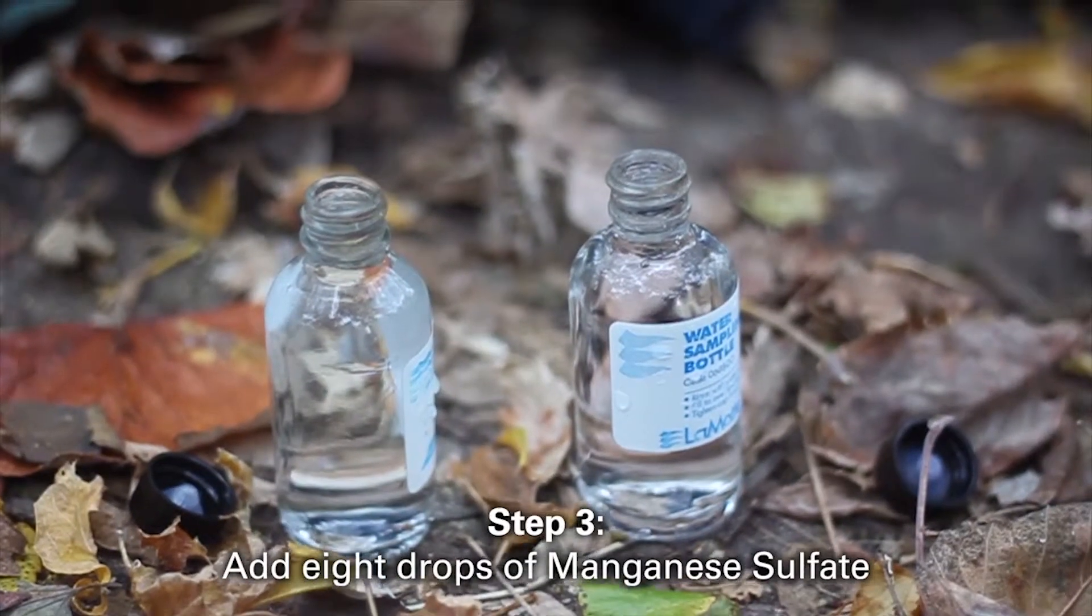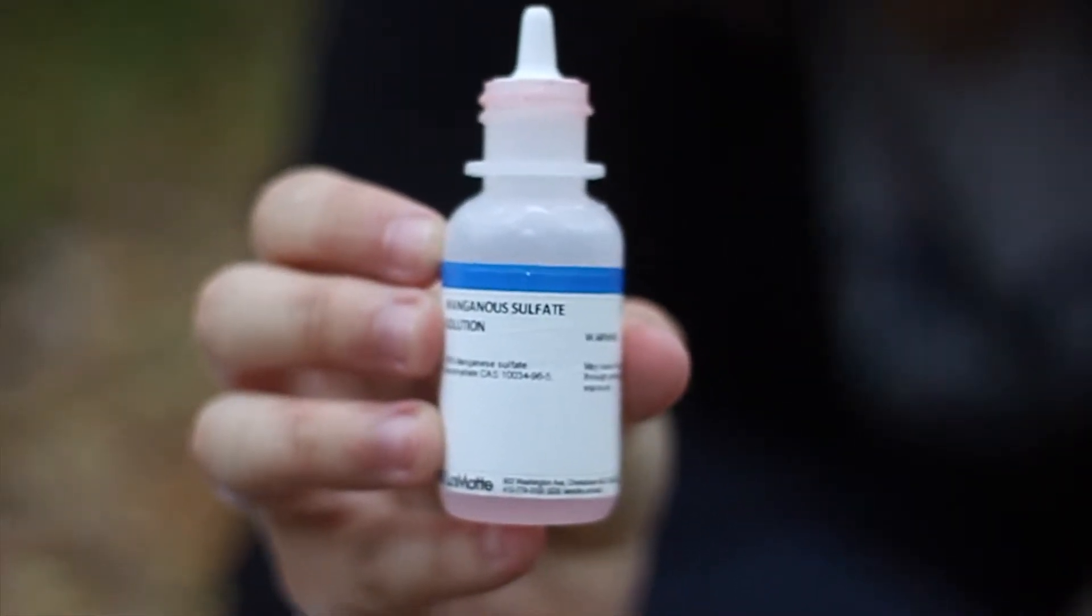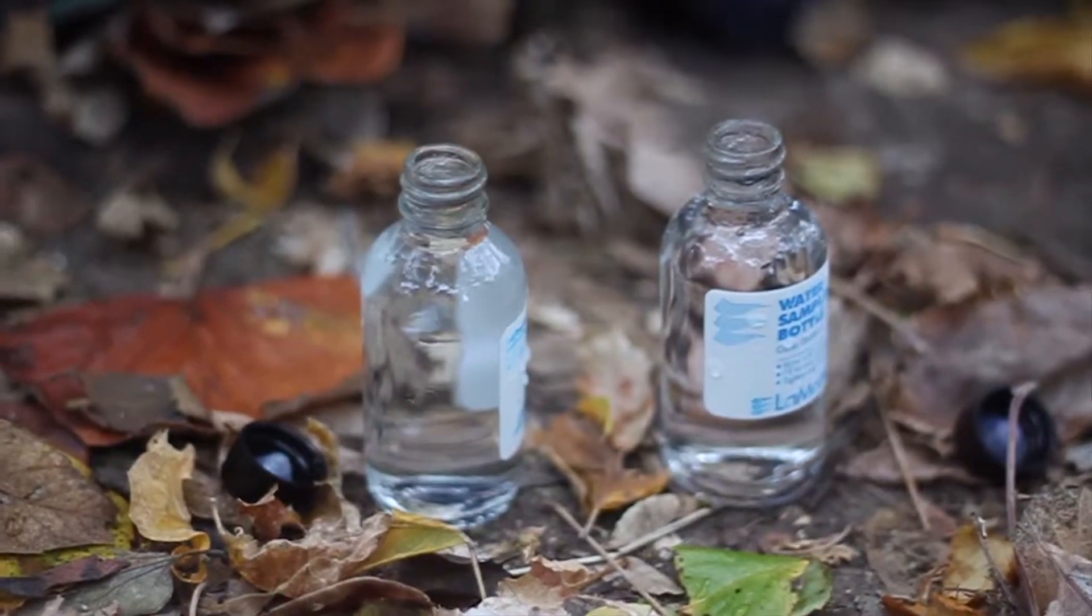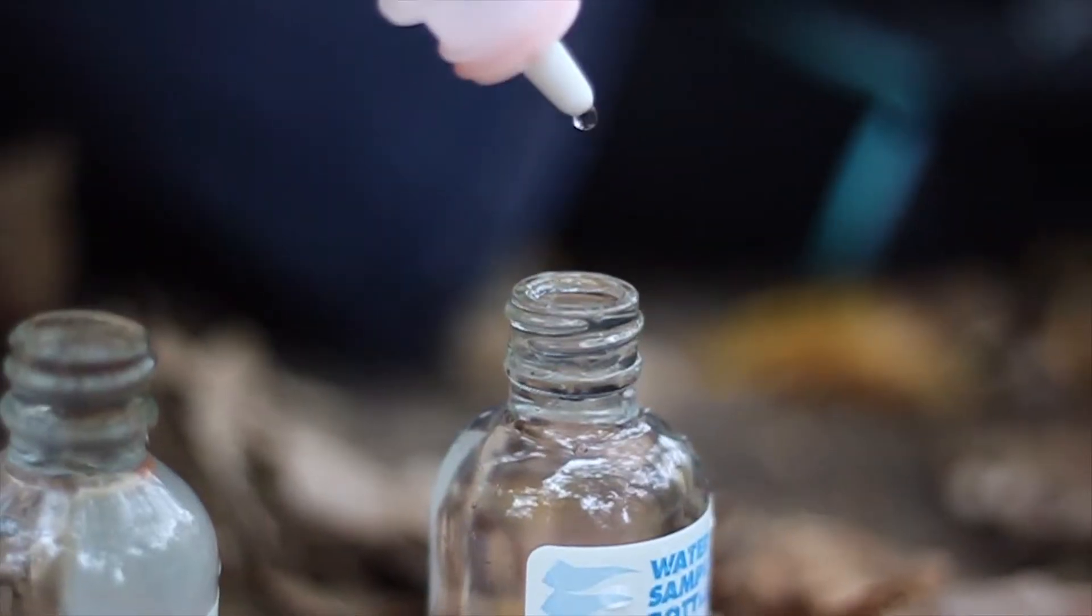Next, we will add 8 drops of manganese sulfate. This is the pink bottle in your kit. If the water begins to run out off the sides, that is okay and expected. After adding 8 drops of manganese sulfate,